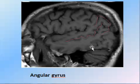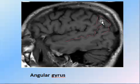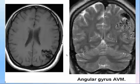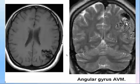The most posterior part of the parietal lobe is called the angular gyrus. A lesion identified here is located at the angular gyrus of the parietal lobe.